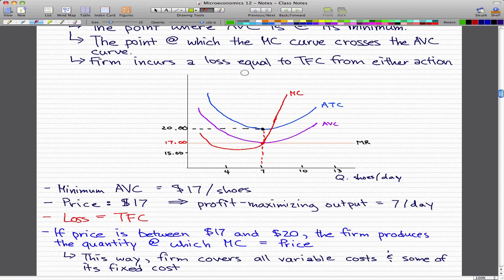Let's take this graph as an example. Here are the criteria. This graph will show the shutdown point. The minimum average variable cost is $17 per shoe. If the price is $17, then the profit maximizing output is 7 shoes per day.